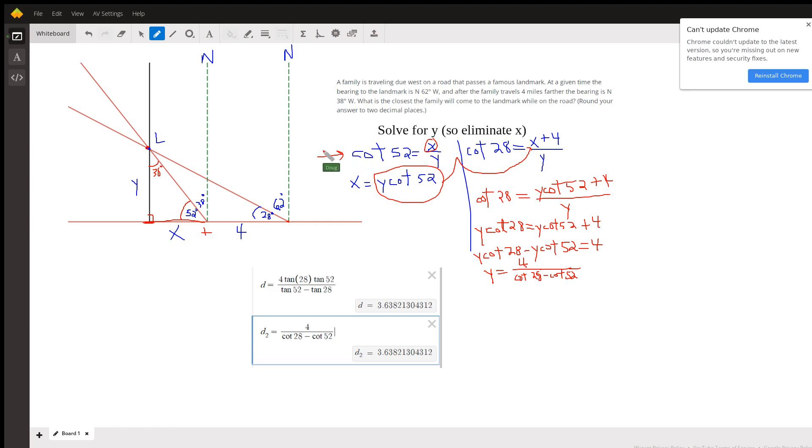Now, if you're using your calculator, you can use intermediate calculations, but if you want to do it all in one fell swoop, this is what you would do. There's the substitution. Multiply both sides by y.